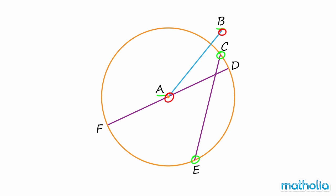Line FD is a straight line. It passes through the center, and its end points are on the circle. So line FD is a diameter of the circle.